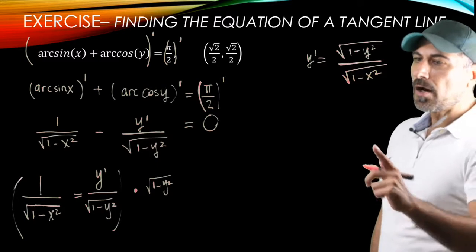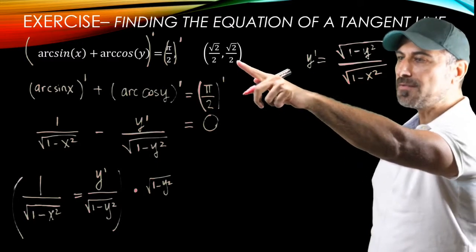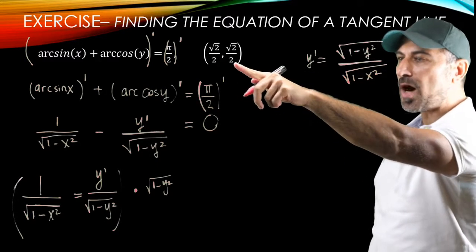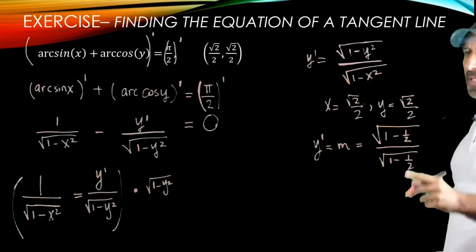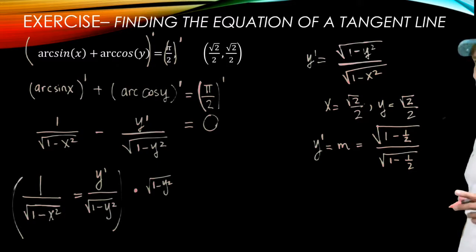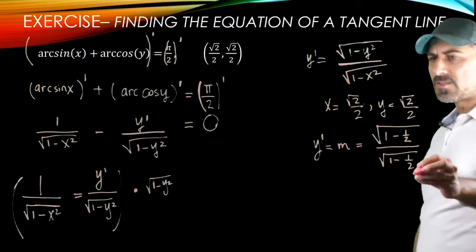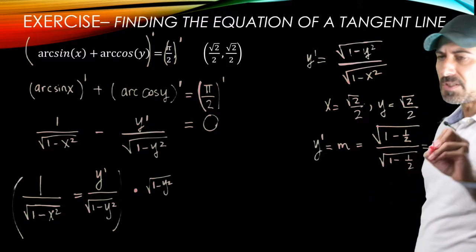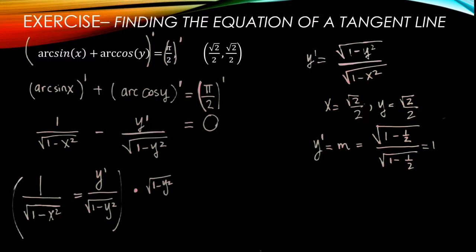All right, so we're going to evaluate y prime at the given point for x equals root 2 over 2, y equals root 2 over 2. The top becomes radical 1 minus 1 half, bottom becomes radical 1 minus 1 half. But these are the same quantities. So then the result is going to be 1.